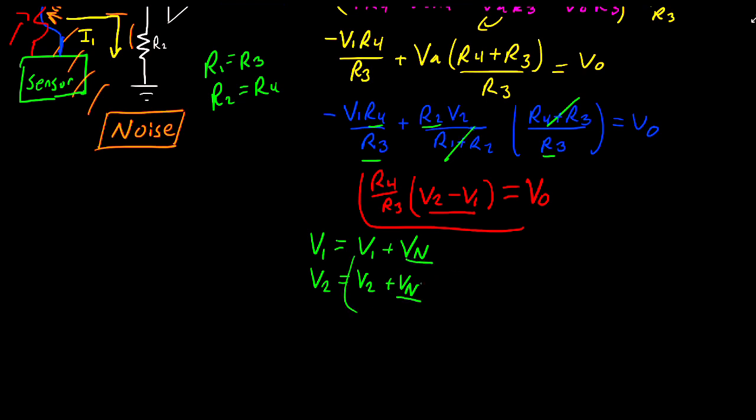So this becomes our new V2 term and this becomes our new V1 term. So now if we use these as our new V1 and V2 values, we get that R4 divided by R3 multiplied by V2 plus VN minus V1 minus VN. Now something really interesting happens. Our two noise voltage values get cancelled out.